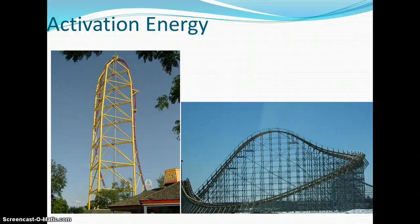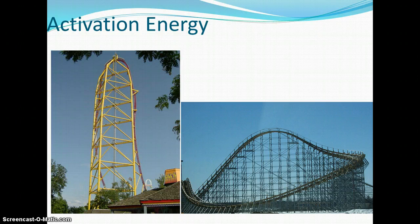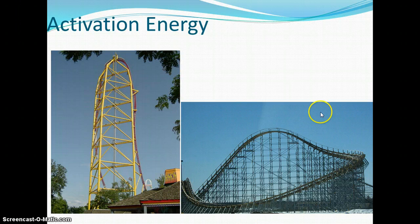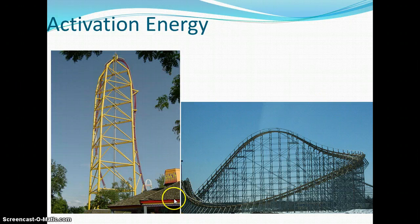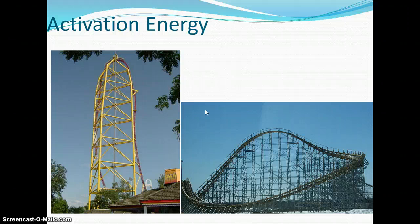Looking at two roller coaster examples: on the left, a really tall roller coaster about 400 feet high requires a lot more activation energy to get the car to the top — representing a slow chemical reaction. On the right, a wooden roller coaster only 150 to 200 feet tall requires much less activation energy to get started, so it's faster. Think about running in a straight line versus running up a really steep hill — the steep hill takes a lot more energy and a lot longer, just like a high activation energy reaction.